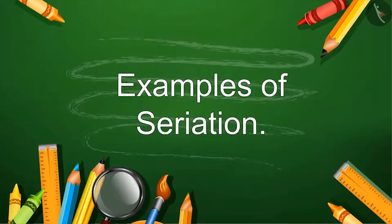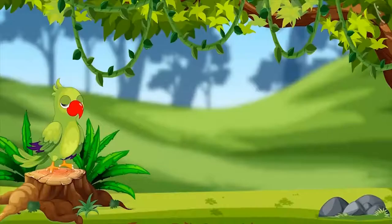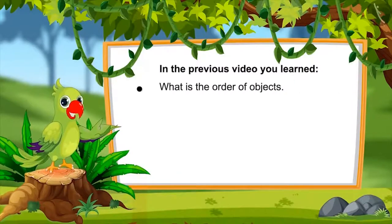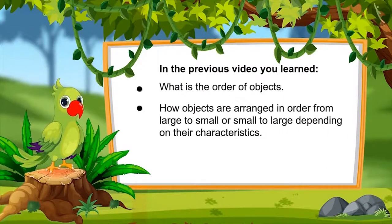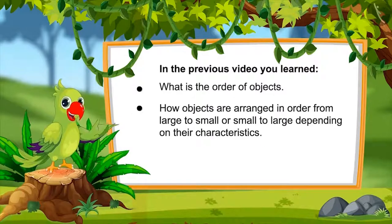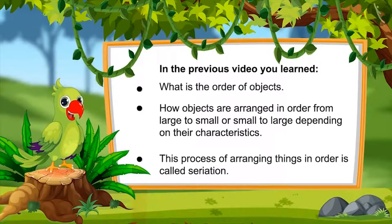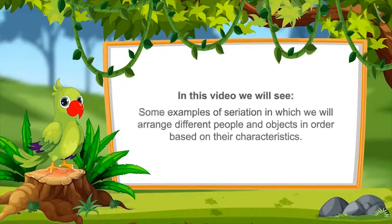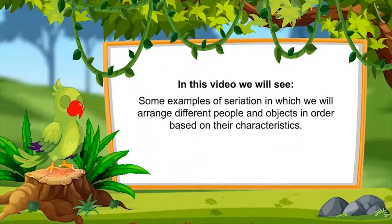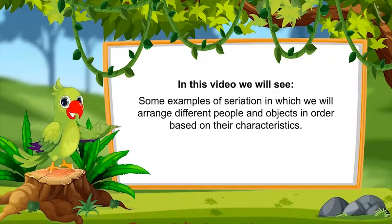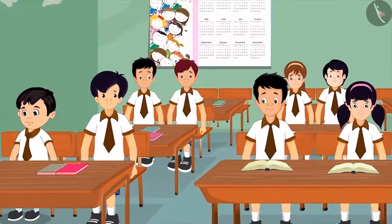What are the examples of seriation? In the previous video, you learned what is the order of objects — how they are arranged in large to small or small to large order based on their characteristics. This process of arranging things in order is called seriation. In this video, we will see some examples of seriation, arranging different people and objects in order based on their characteristics.